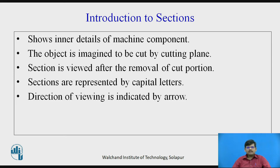Section View is used to see the inner detail of a machine component. The inner detail can be highlighted in the drawing by taking a proper sectional view. We imagine that the object is cut by a cutting plane, and by removing the cut portion, we draw the object in a particular view with the hidden details and section lines. The cutting plane is represented by two capital letters at each end, and the direction of viewing is shown by the help of an arrow. In the direction of the arrow, we draw the sectional view.